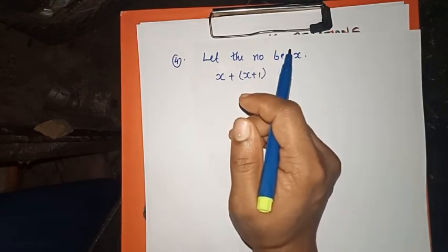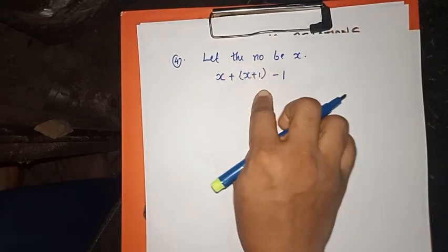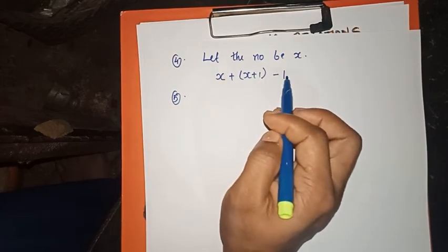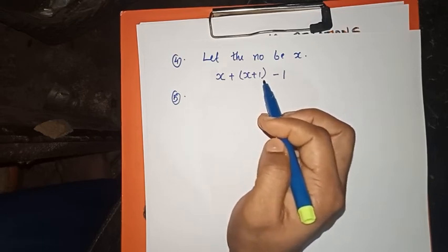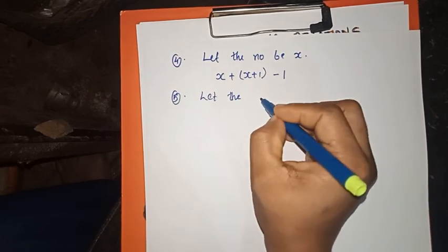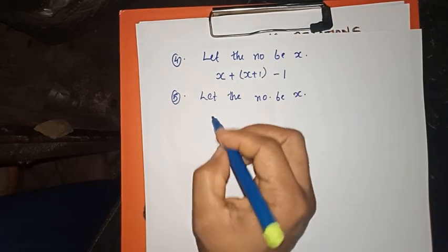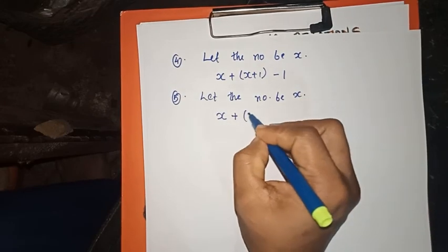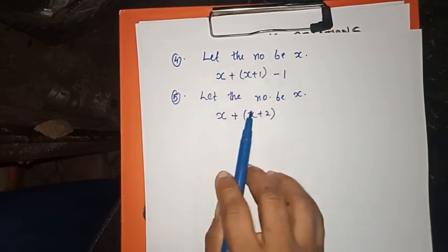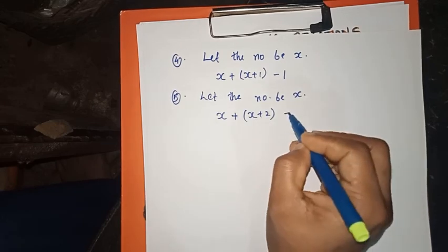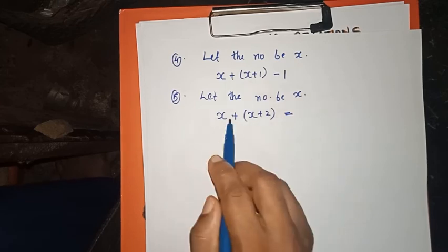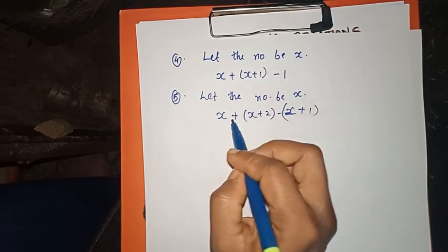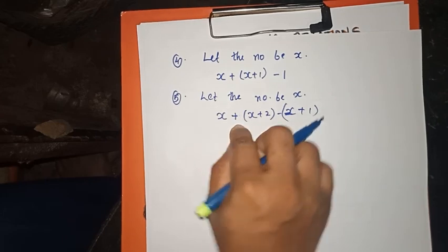Find the number 1 less than x, which is x minus 1. For two consecutive odd numbers: odd numbers are 1, 3, 5, 7. If the first odd number is x, the next consecutive odd number is x plus 2. So the two consecutive odd numbers are x and x plus 2.